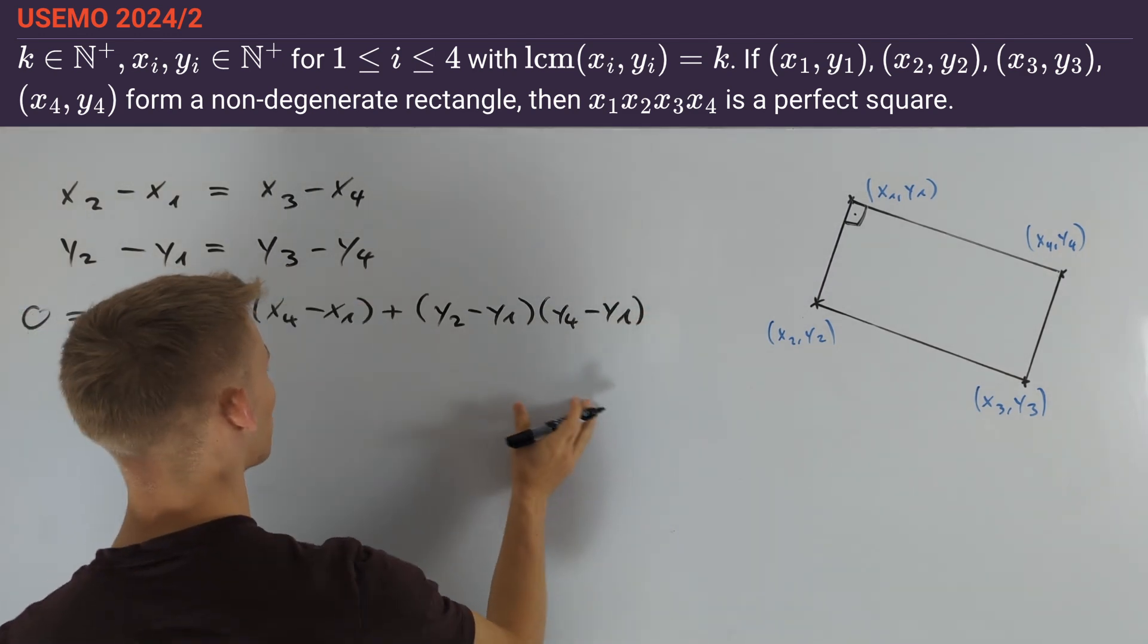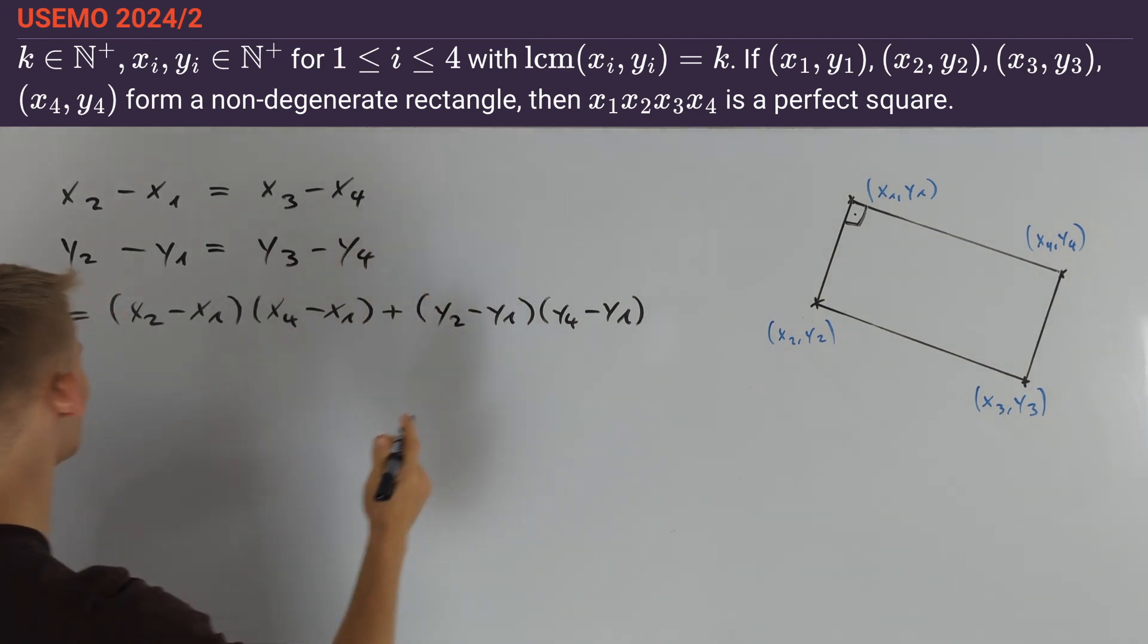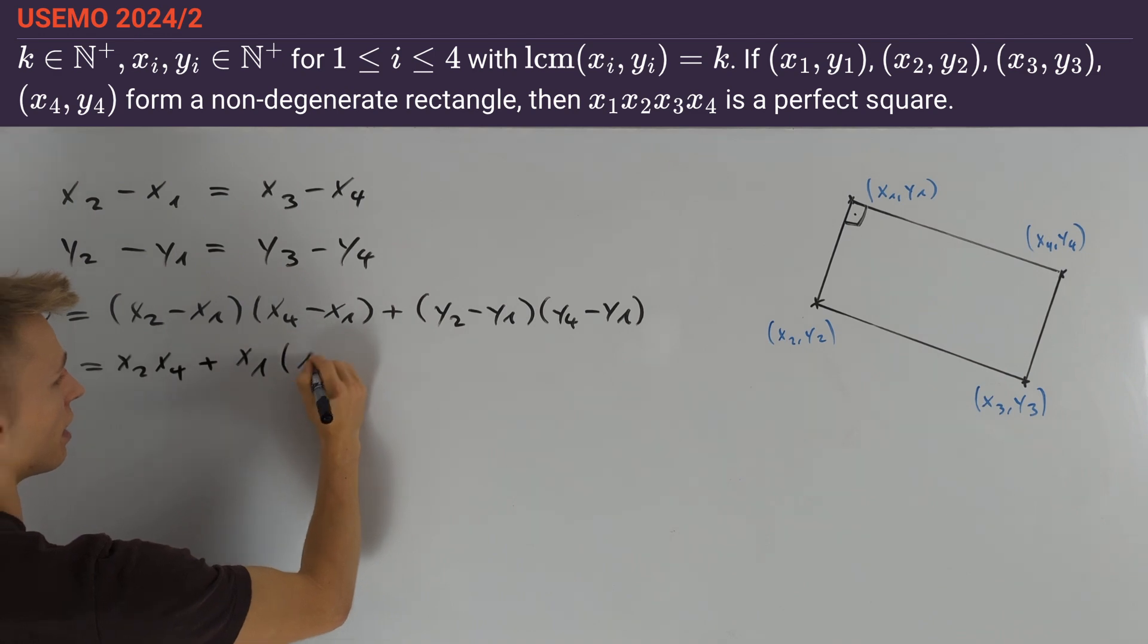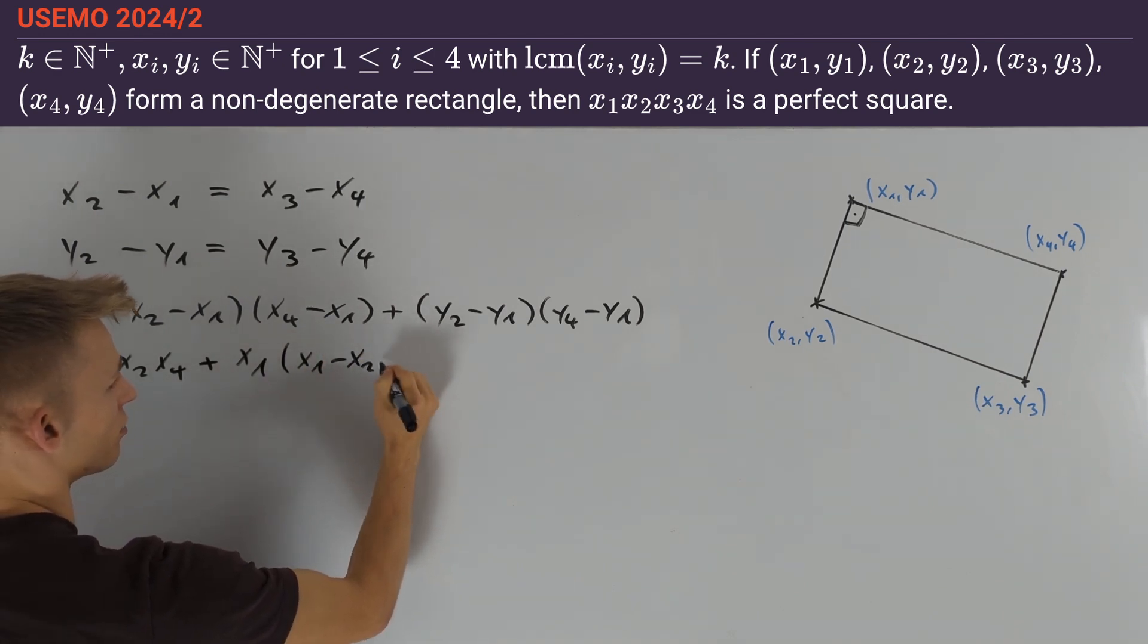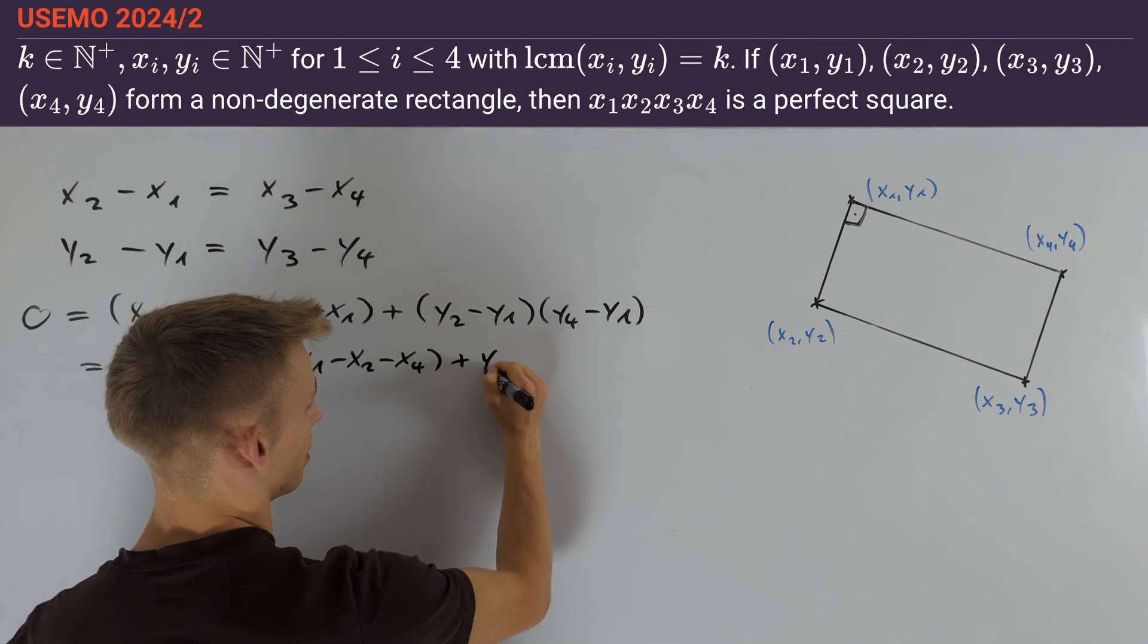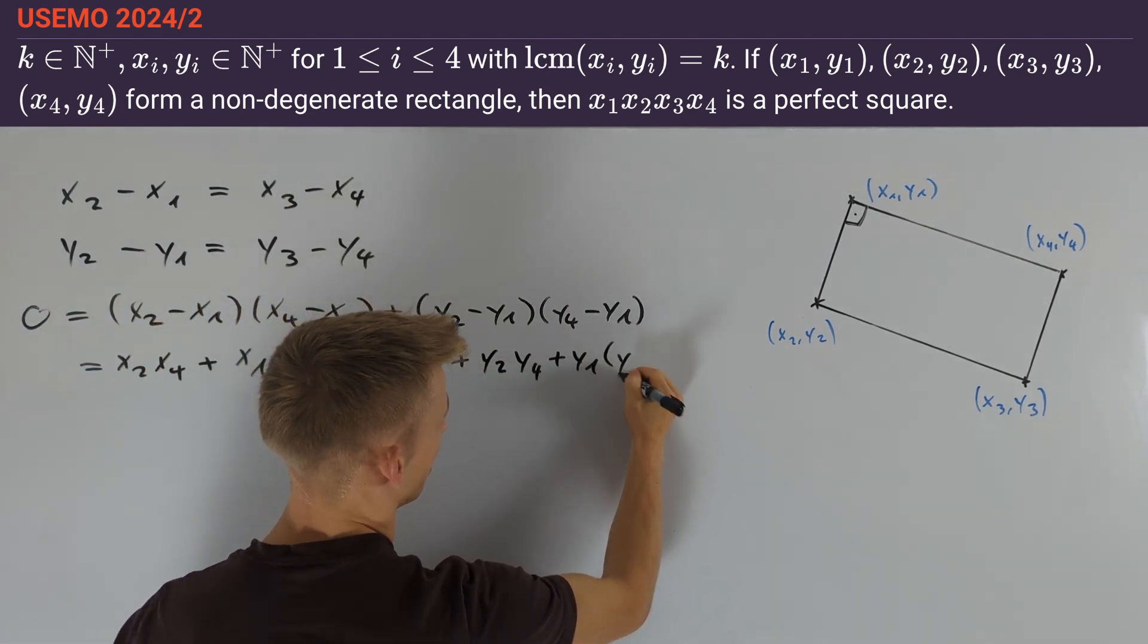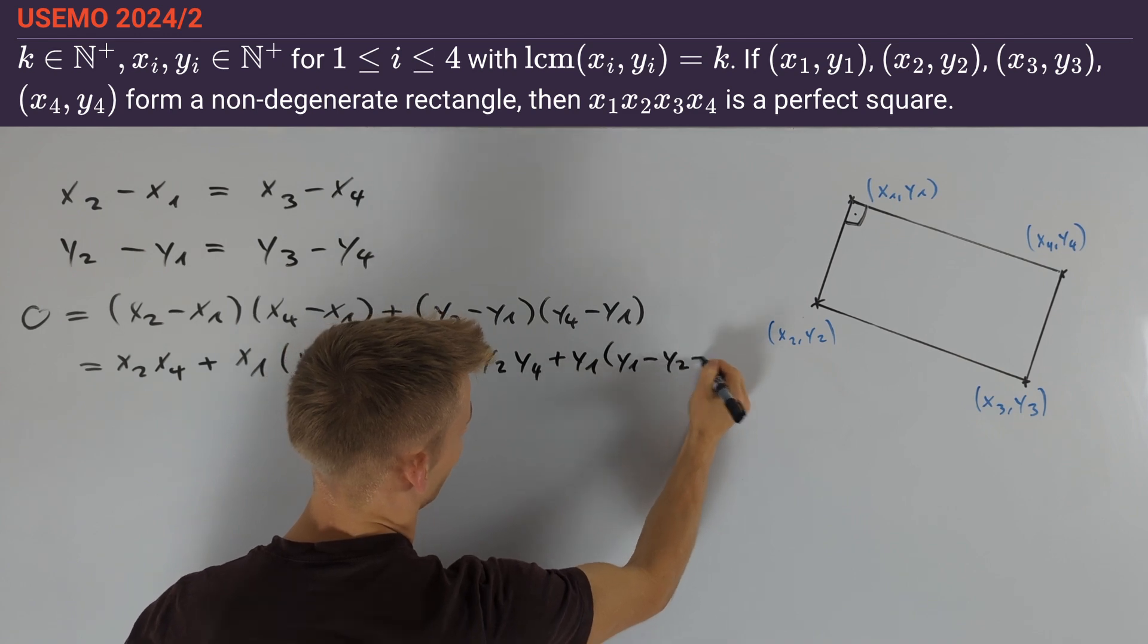We would like to simplify this expression using the two equations above. We can rewrite this equation as x2 times x4 plus x1 times x1 minus x2 minus x4, and the second term equals y2 times y4 plus y1 times y1 minus y2 minus y4.